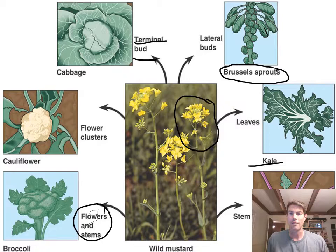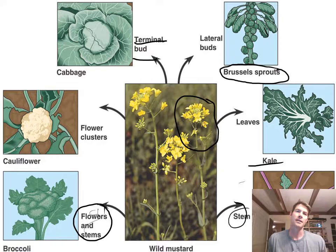Kohlrabi — we don't really look at that too much, but it focuses on the stem. So just like we see with dogs and other animals when we domesticate them, we can get all these amazing plants, all these varieties, all from a single original one.